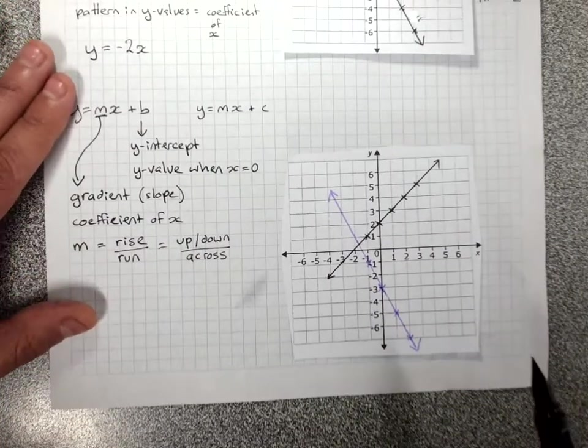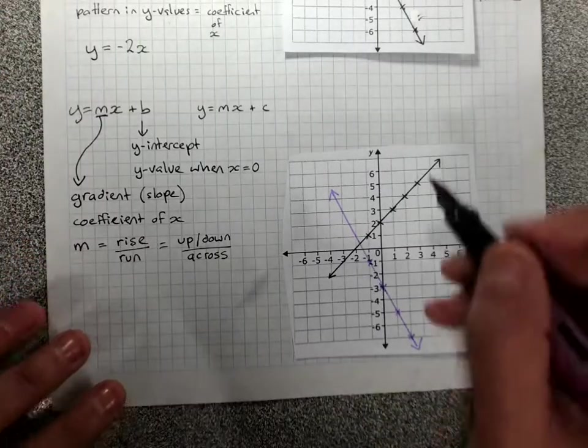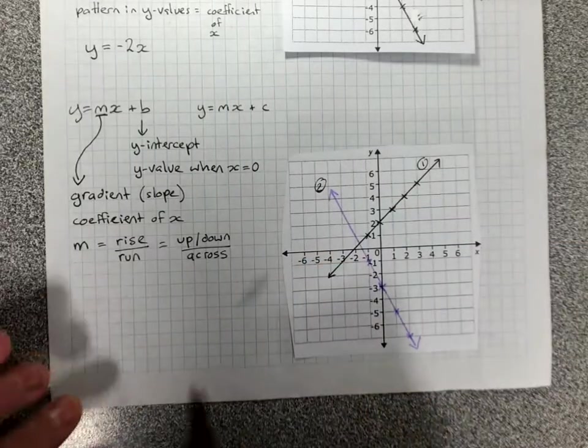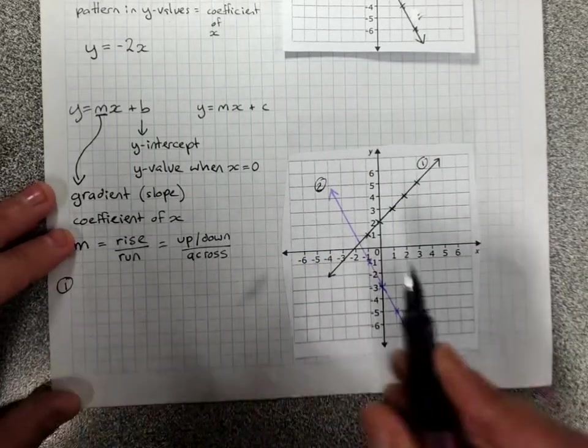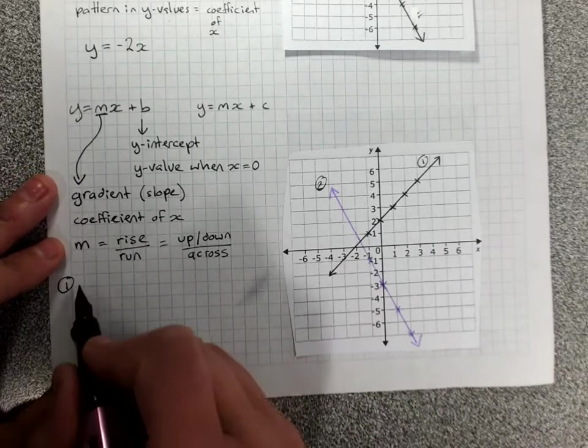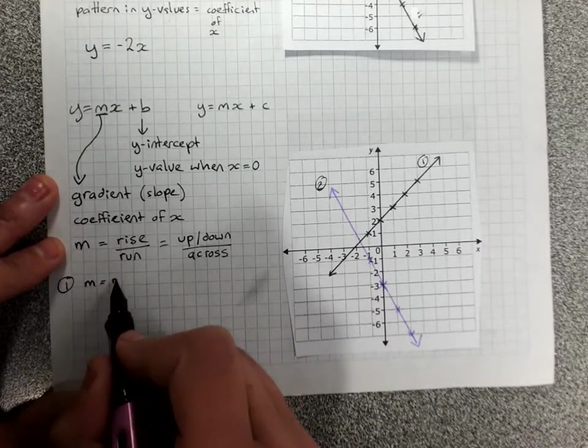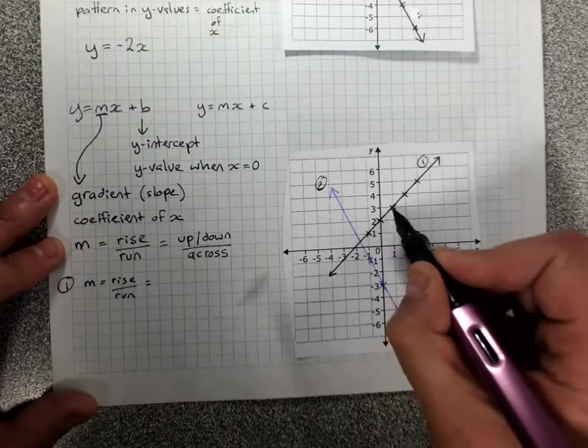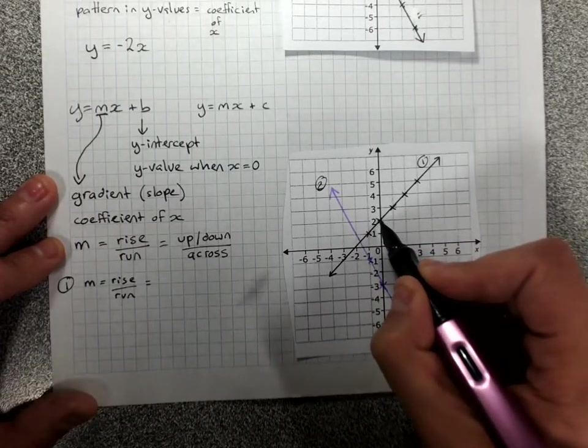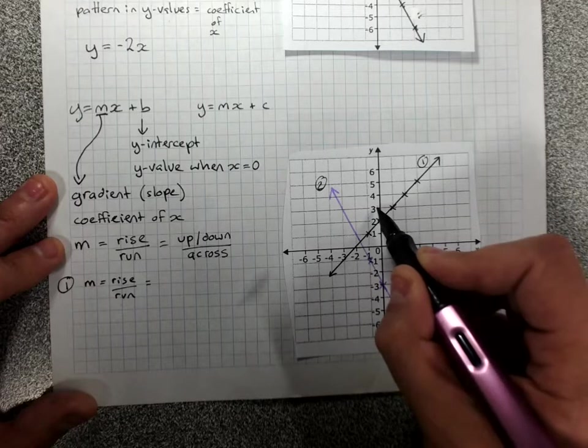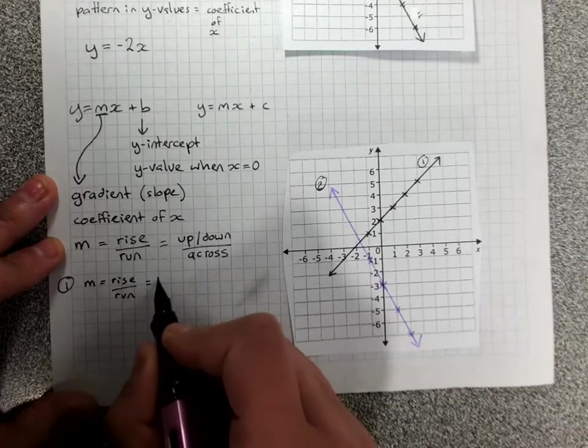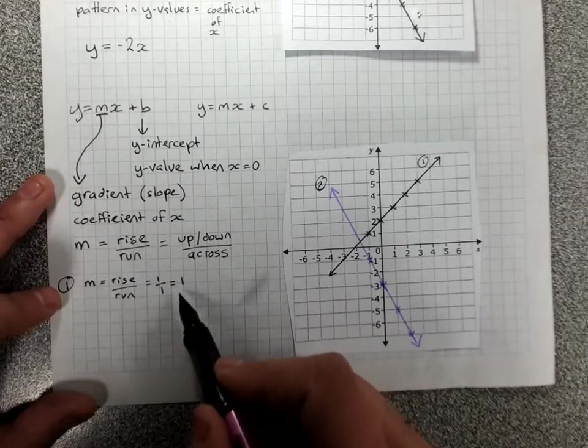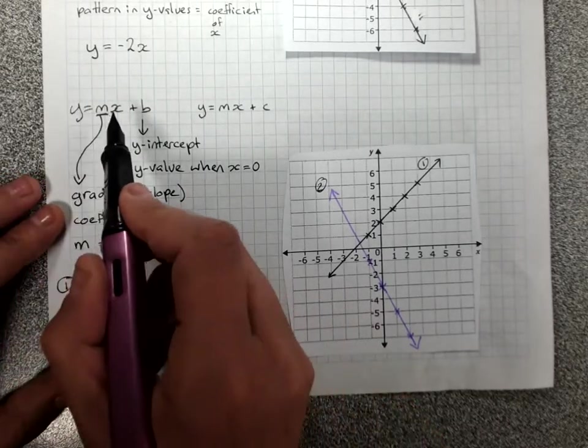So if we did this method for these two graphs, make this graph 1, that can be line 2. So line 1, we've got to find the gradient first. The gradient is rise over run. Between these two points, any two points, it goes up 1 and across 1. 1 divided by 1 equals 1. The gradient is 1, so the coefficient of x is 1.